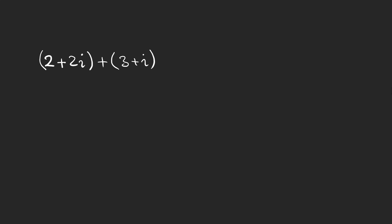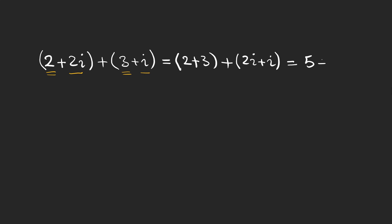The first one is addition. To add two complex numbers we just add the real parts and then add the imaginary parts. For example here we have five plus three i, which is another complex number.